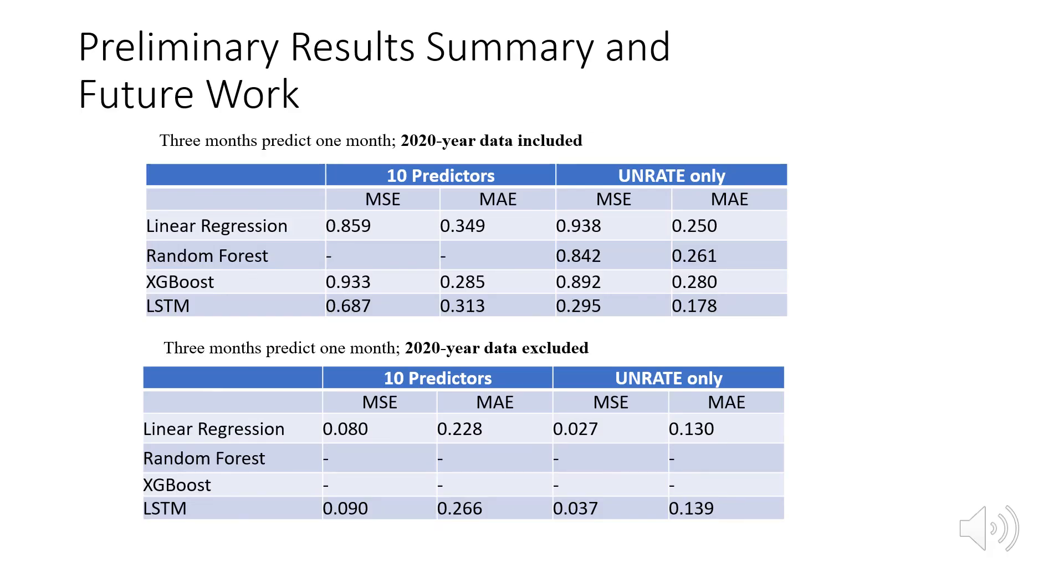Finally, we present a summary of our preliminary results. We can see that for the model that included 2020 data, LSTM performed the best for both models that included all 10 predictors, as well as models that only use unemployment rate. Whereas for models that excluded 2020 data, LSTM and linear regression performed similar. This could be because we are only doing single step prediction. For multiple step prediction, in which more previous data are dependent, it is reasonable to expect linear regression to perform worse. In the future, we will do multi-step prediction, as well as refining our random forest and XGBoost models. Thank you for watching.